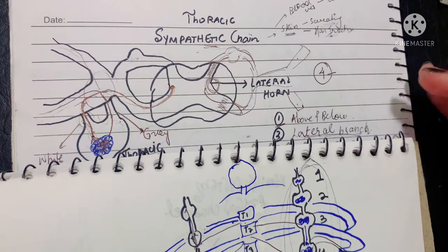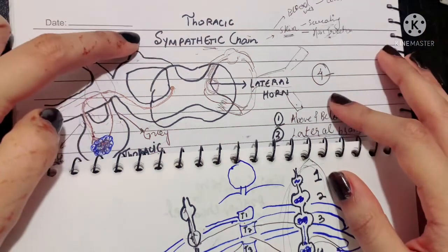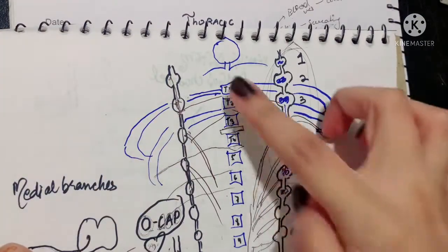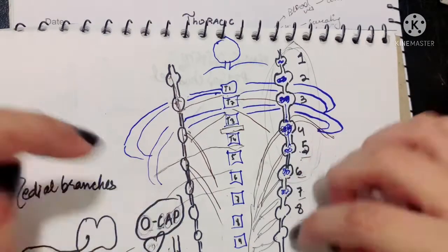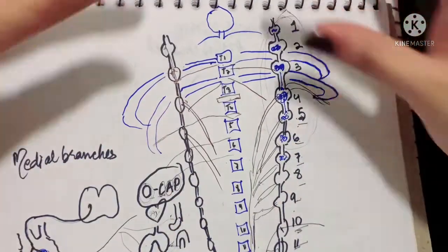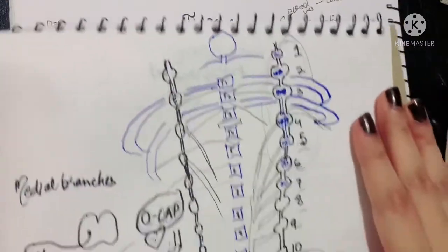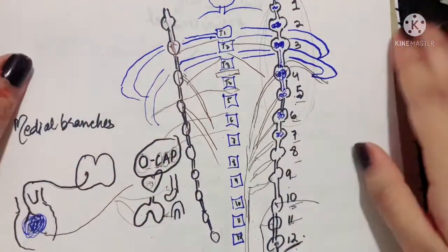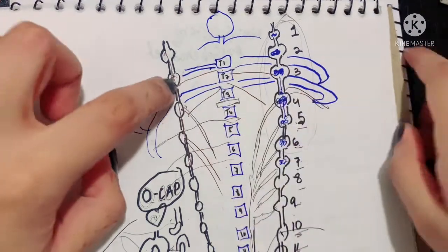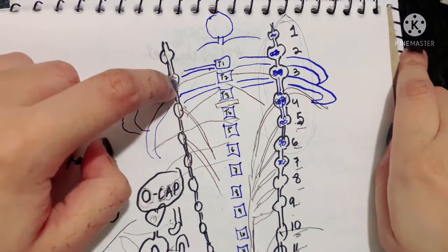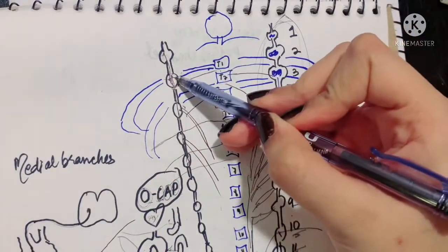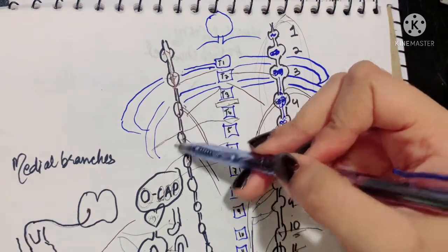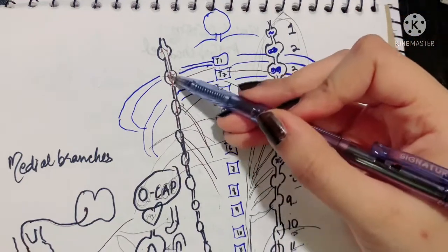Now let's review this in direct terms. The thoracic sympathetic chain is a ganglionated chain located on either side of the thoracic vertebral column. These ganglions are 12 in number. Sympathetic fibers from the spinal nerves enter these ganglions and meet four fates: they can enter via the white rami communicantes and travel to upper or lower ganglions and synapse there; or they can become the lateral branch traveling via the gray rami communicantes.